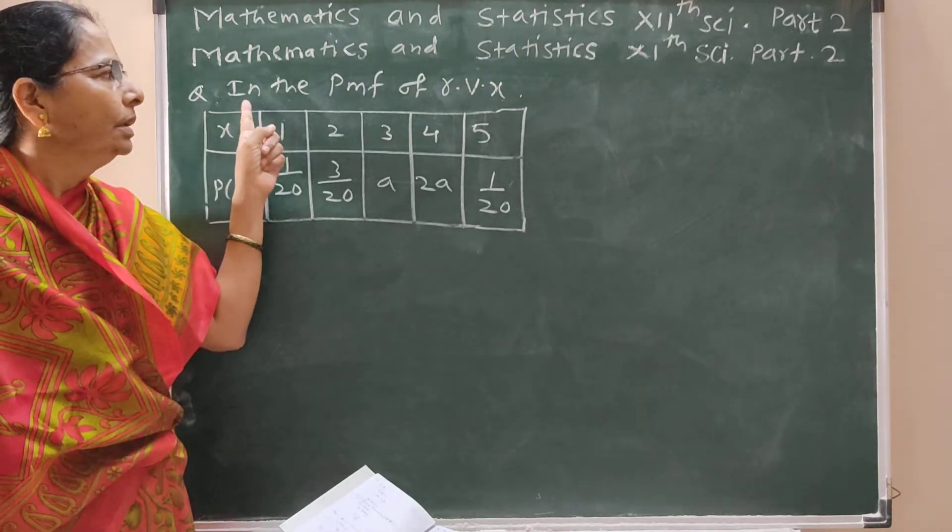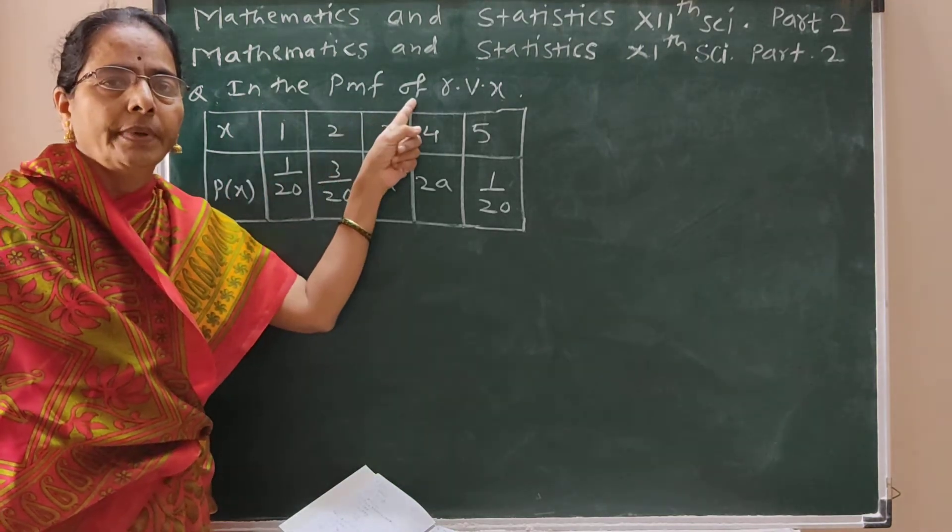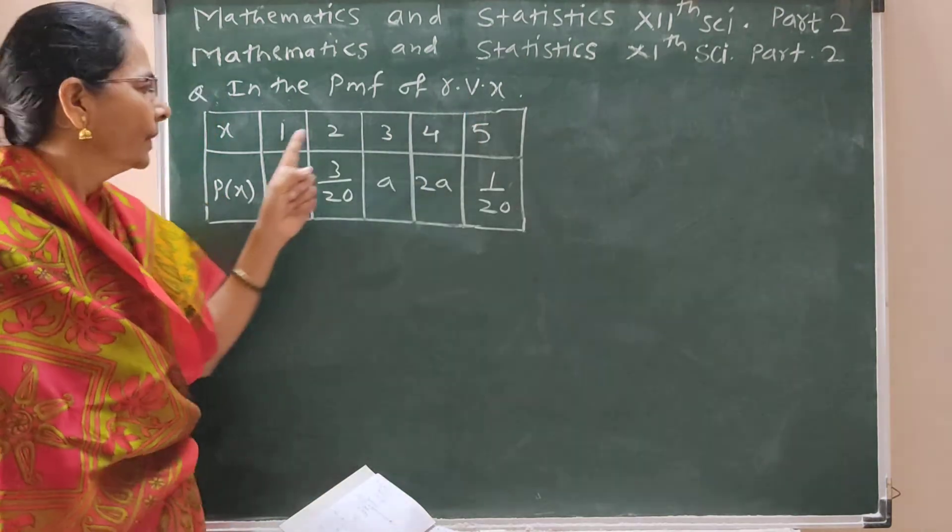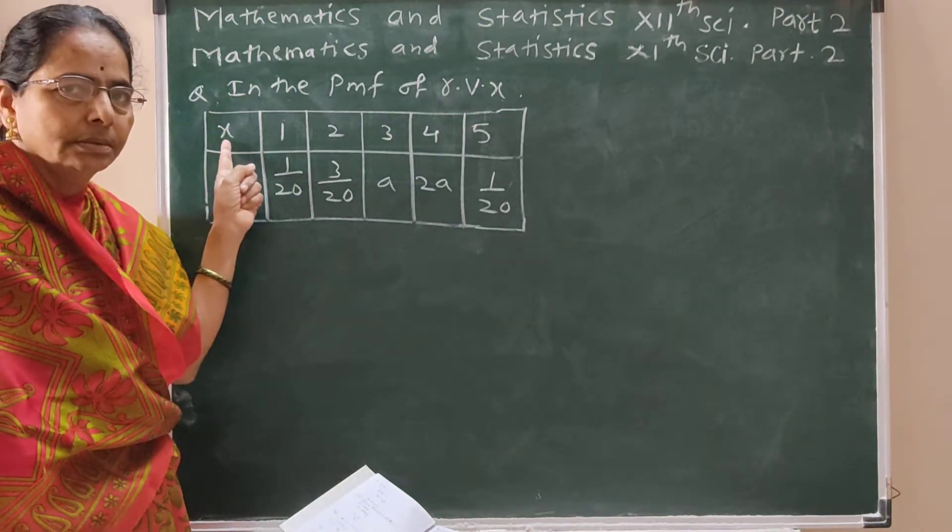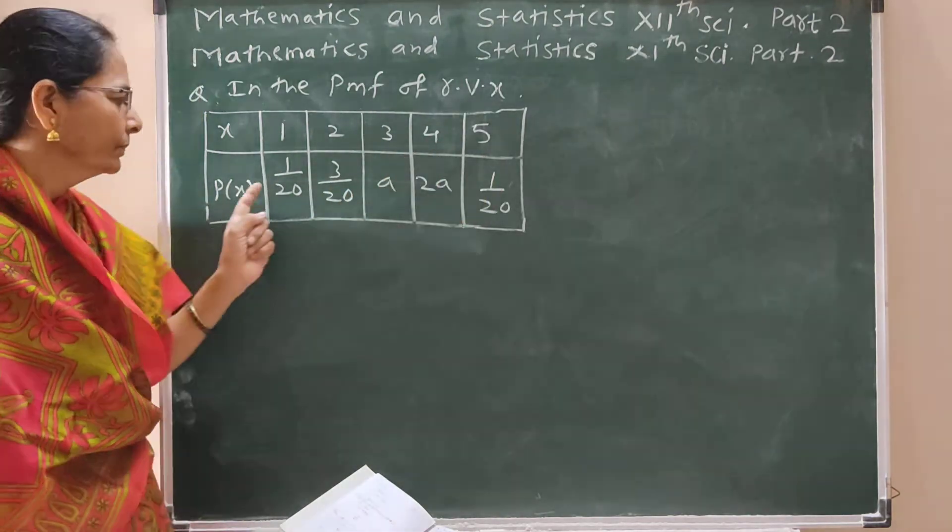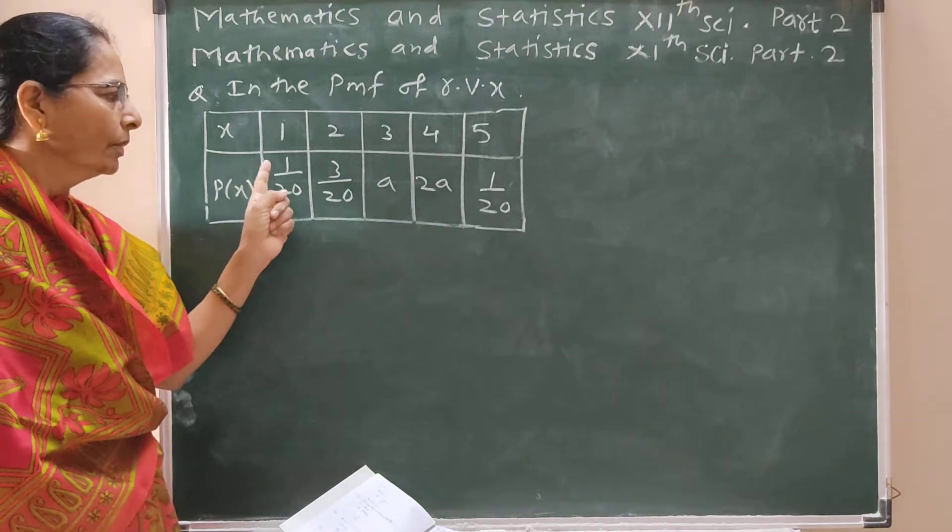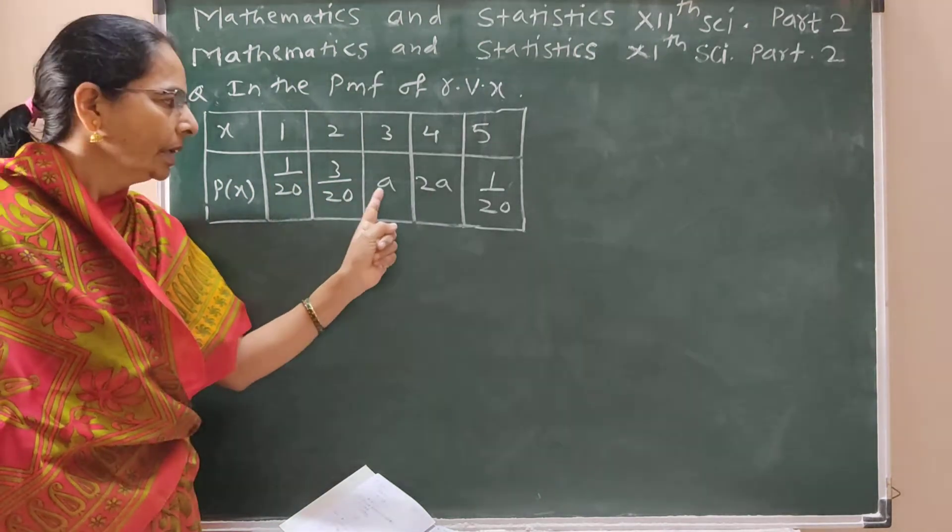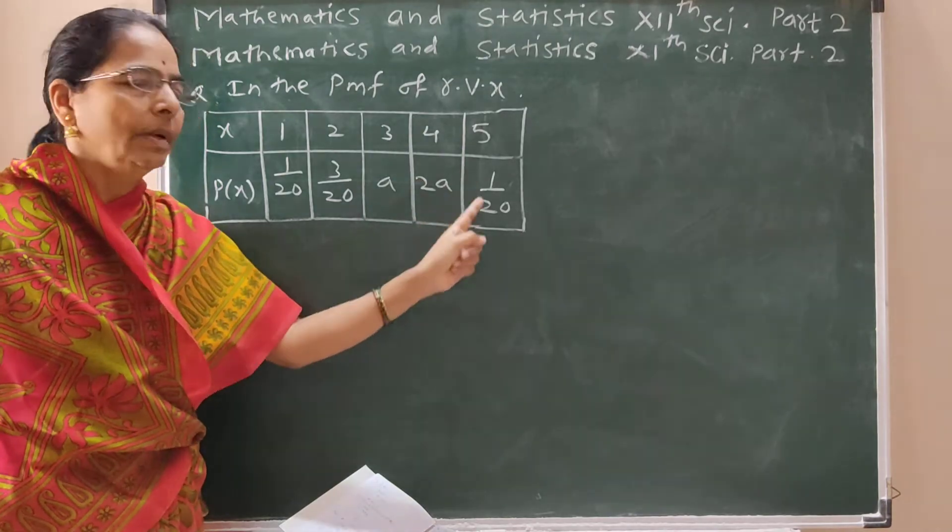Question: In the PMF of random variable X, X takes values 1, 2, 3, 4, 5 with probabilities PX: 1 upon 20, 3 upon 20, A, 2A, 1 upon 20.